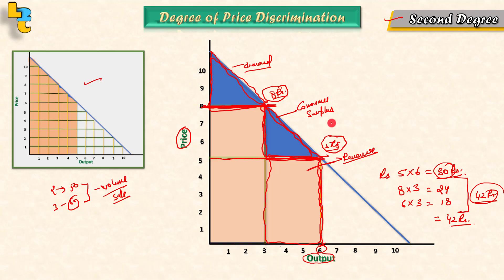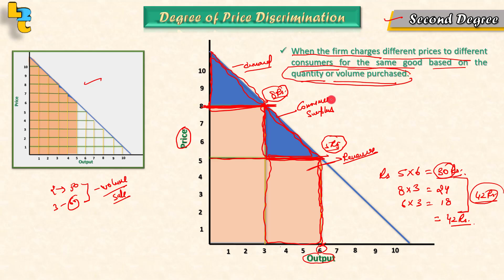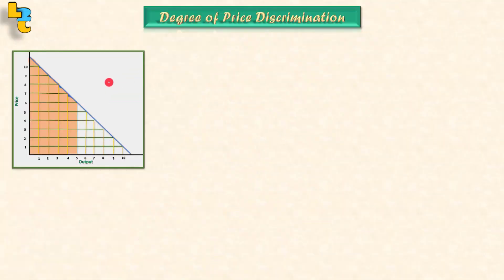The definition of second degree price discrimination is: when the firm charges different prices to different consumers for the same good based on the quantity and volume purchased. This is also called block pricing or volume pricing. We call this second degree price discrimination.